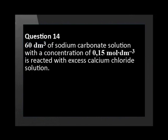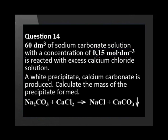60 cubic centimeters of sodium carbonate solution with a concentration of 0.15 moles per cubic decimeter is reacted with excess calcium chloride solution. A white precipitate, calcium carbonate, is produced. Calculate the mass of the precipitate formed. Na2CO3 + CaCl2 → NaCl + CaCO3.